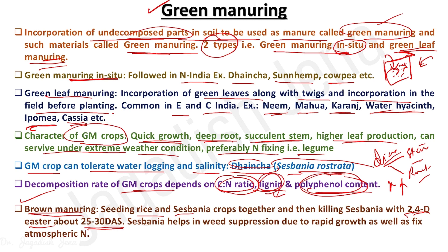Live mulch or live manuring refers to growing an intercrop — for example, green gram — in between two rows of a cereal or widely spaced crop like maize. This provides a live mulch effect: it fixes atmospheric nitrogen, suppresses weed growth, and if the intercrop is cut and spread over the soil, it will decompose gradually and continue to suppress weed growth. This is the concept of live mulch, completing the overview of green manuring, green leaf manuring, brown manuring, and live mulch.